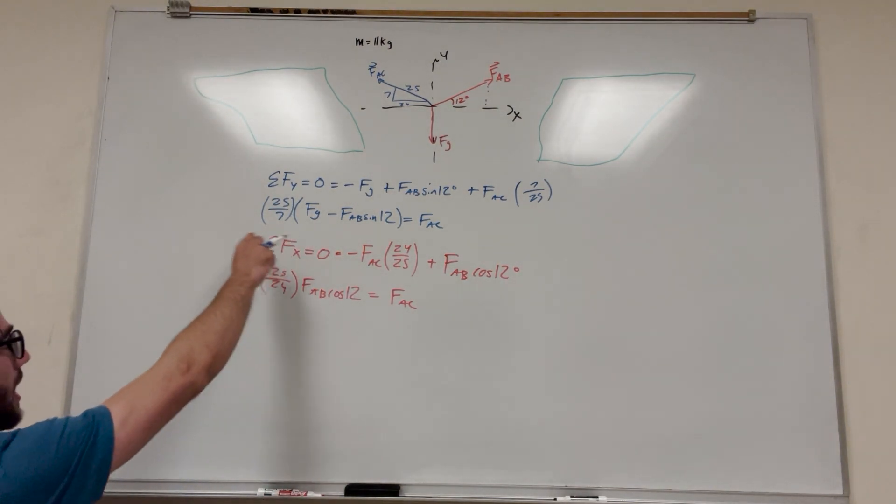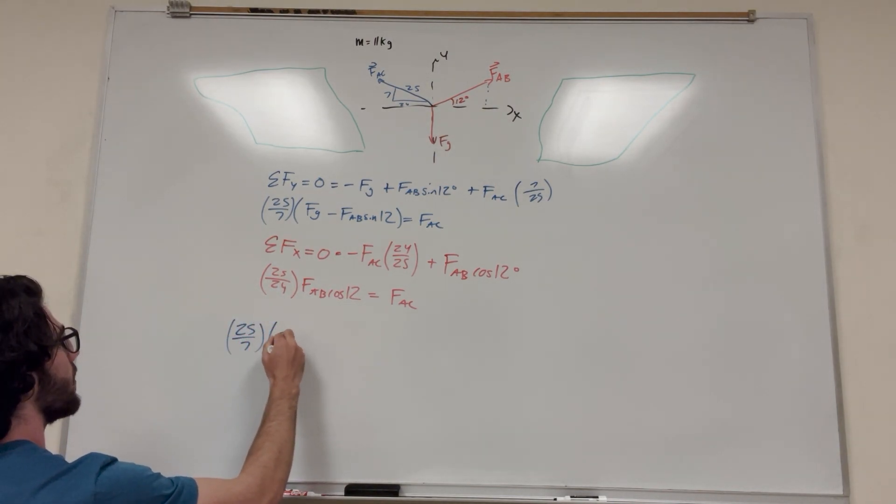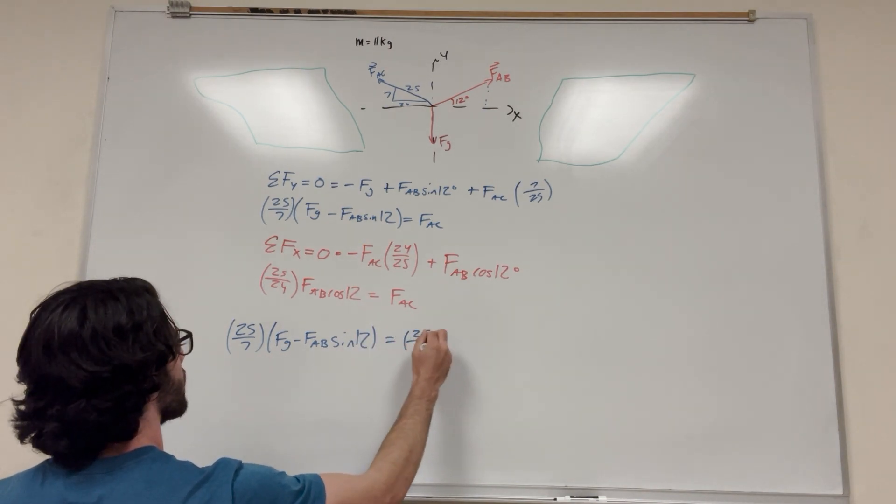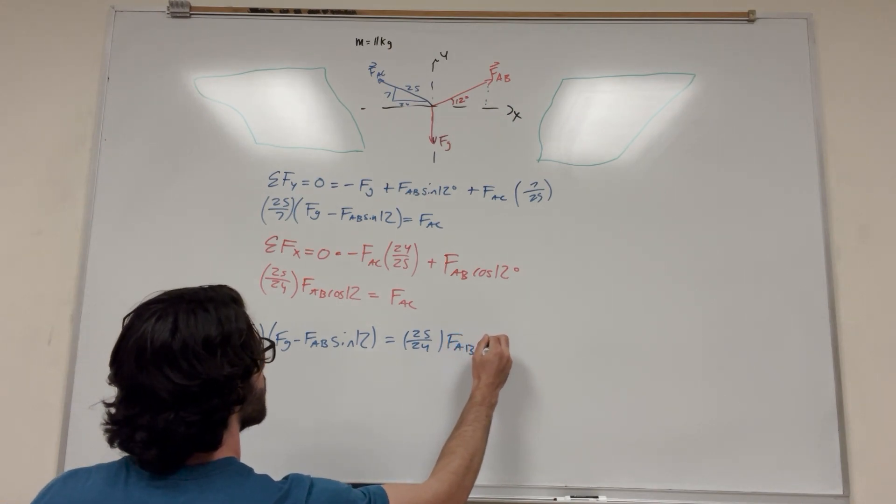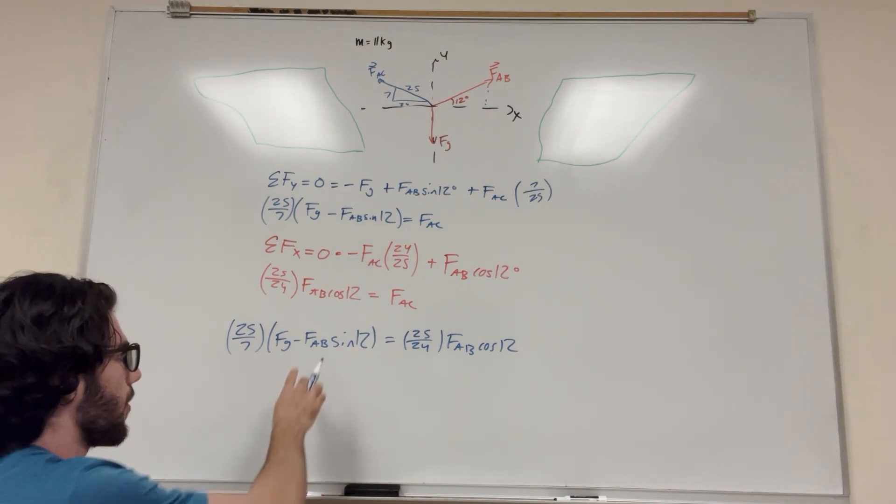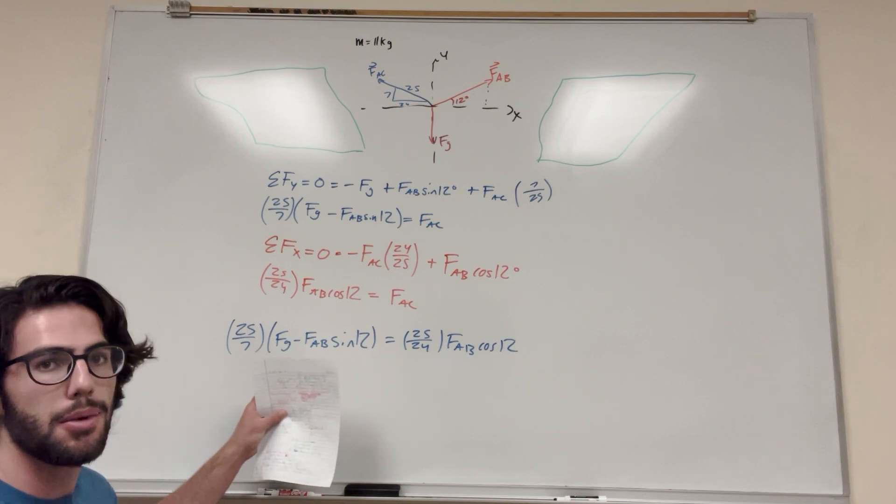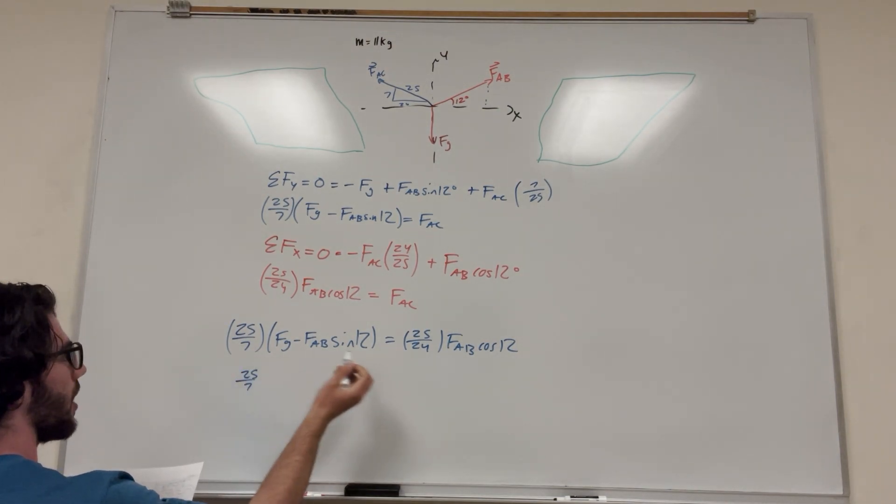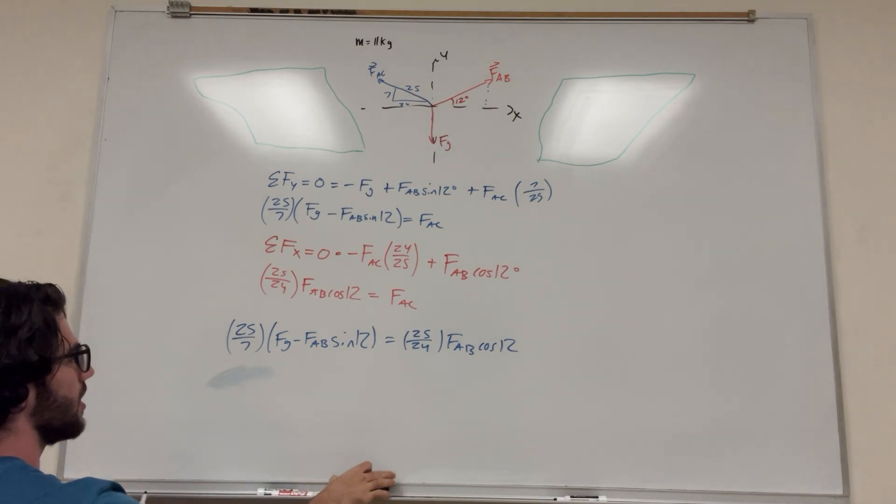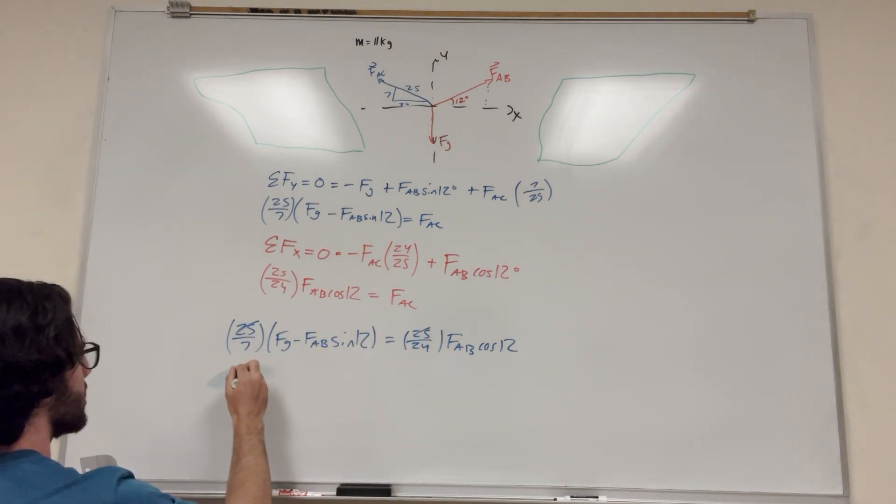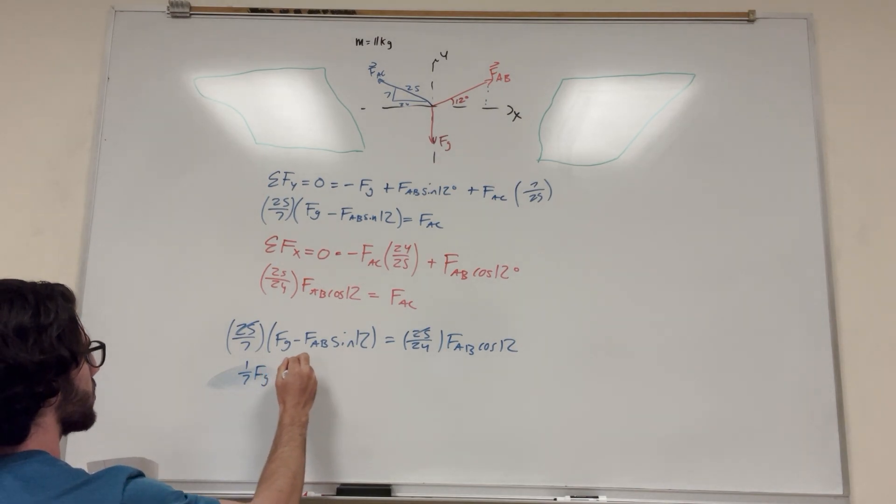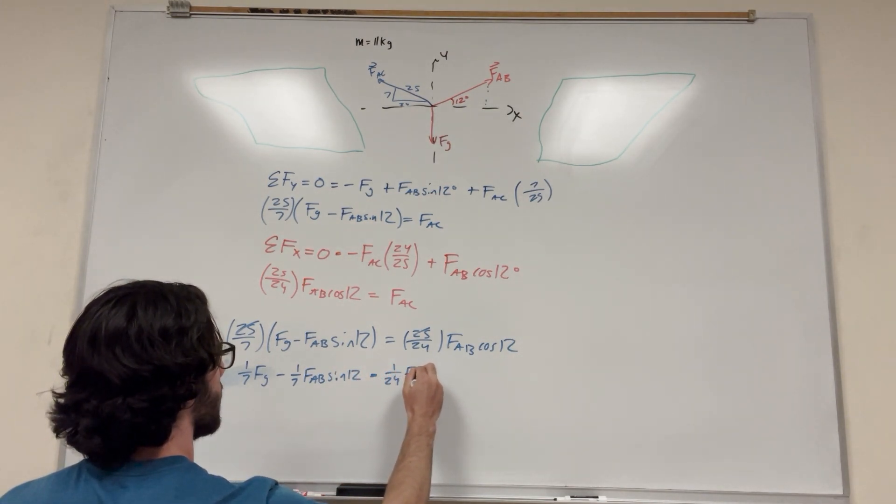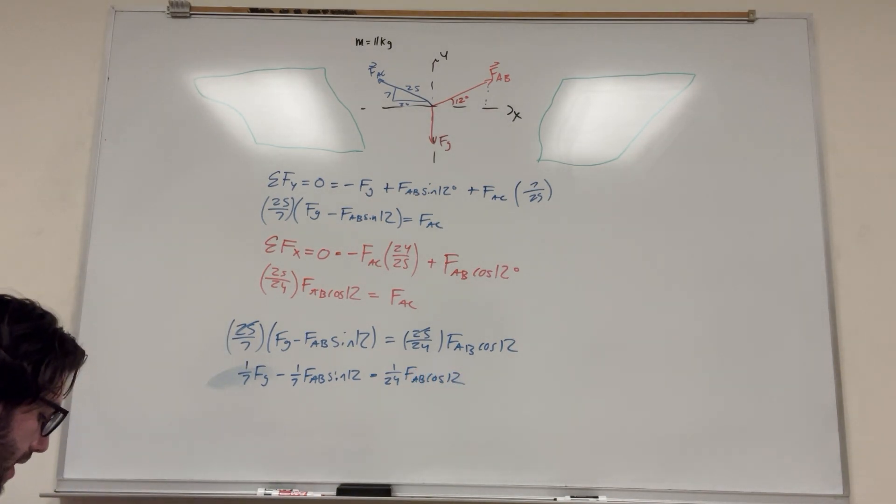So setting this equal to this, it's just going to be 25 over 7, force gravity minus force AB sine of 12 is equal to 25 over 24, force AB cosine of 12. So now you'll notice here, the only unknown that we have is force AB. There's no force AC in this equation, which is great. We have force of gravity, but we can figure that out later. So now we want to get these force ABs together. So I'm going to distribute everything. 25 over 7. Oh, also, these 25s are going to cancel. You notice that there's a 25 here and a 25 here, so we can essentially just cancel out the 25s. So it'll become 1 over 7 force gravity minus 1 over 7 force AB sine of 12 is equal to 1 over 24 force AB cosine of 12.